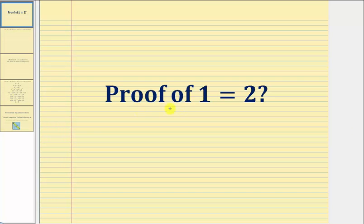Let's look at a potential proof that one equals two. We know one doesn't equal two, so maybe there's something wrong with the proof. Let's take a look.